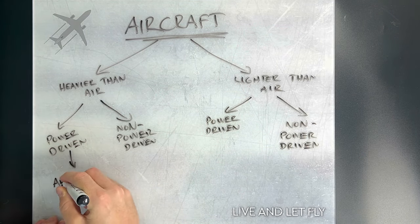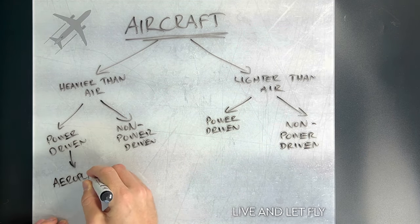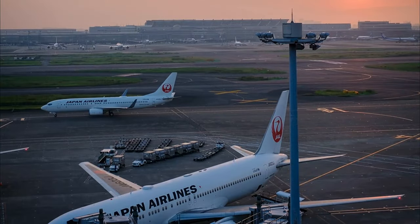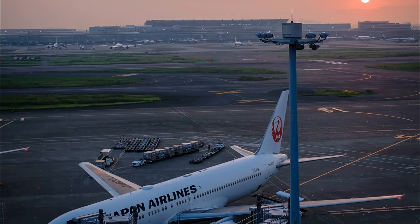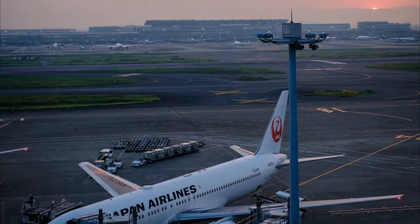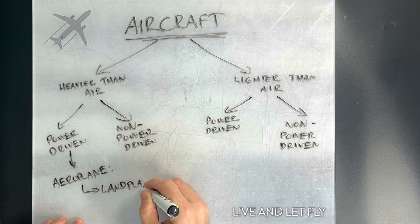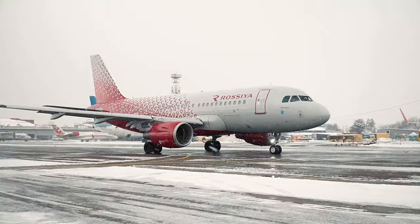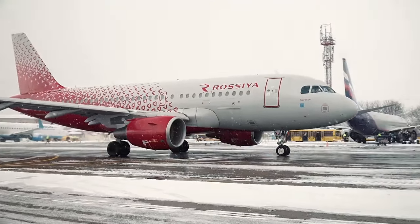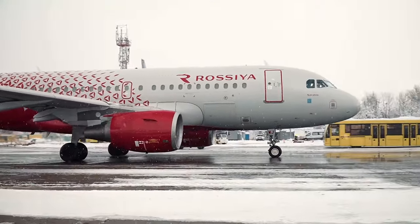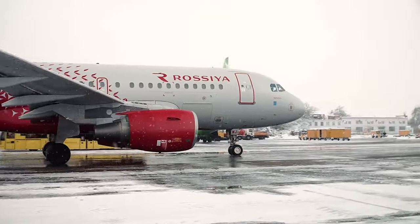Let's begin with the most common type, the aeroplane. Aeroplanes are power driven, heavier than air machines that derive their lift during flight from aerodynamic reactions on fixed surfaces. Within this category there are further distinctions. Land planes can operate exclusively on land surfaces — your typical commercial jets, propeller planes, and more.